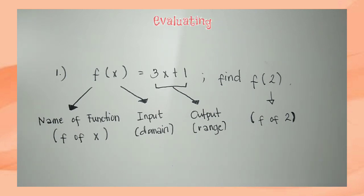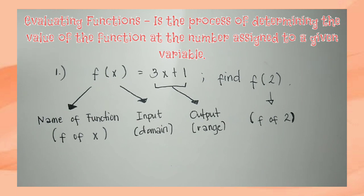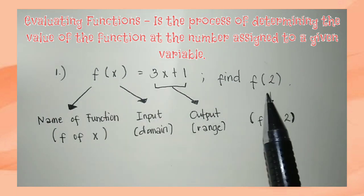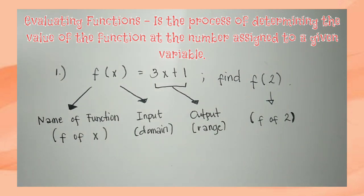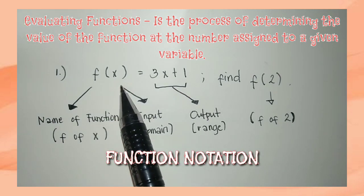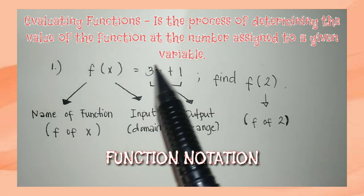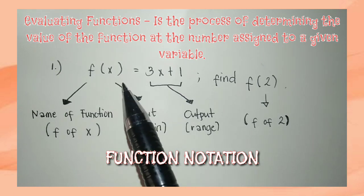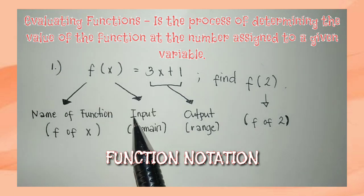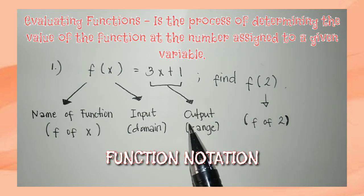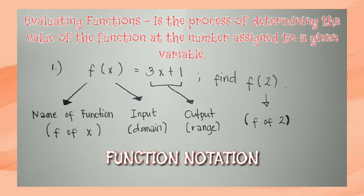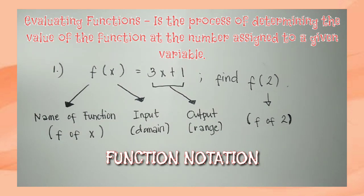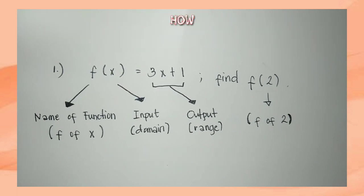So what is evaluating functions? Evaluating functions is the process of determining the value of the function at the number assigned to a given variable. We have function notation: f of x. The f is the name of the function, x is the input or the domain, and 3x plus 1 is our output or the range. For example, f of 2 — that is what we call function notation.